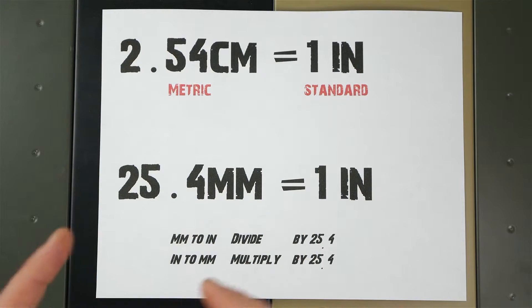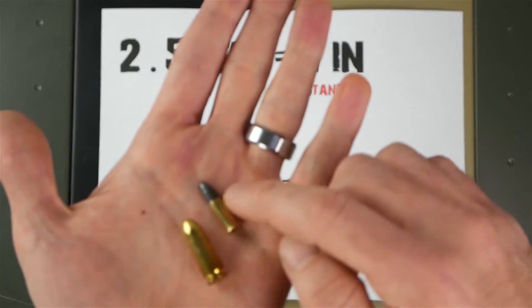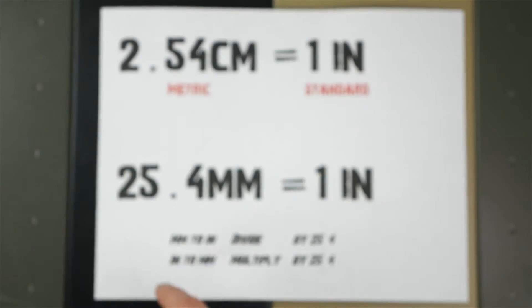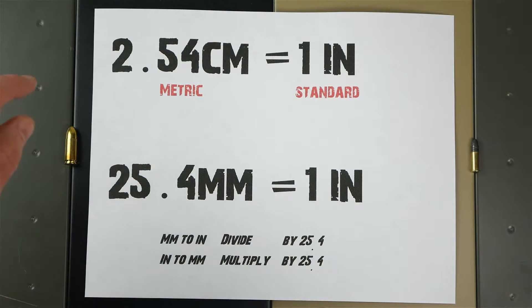It's very simple to convert between them. If you have nine millimeter and want to know how that compares to something in the standard system, you divide by 25.4. If you have something in inches like a .22 and you want to know what that is in millimeters, you multiply by 25.4. Let's figure out what nine millimeters is in the standard system.